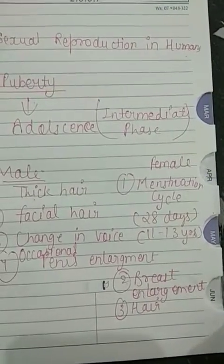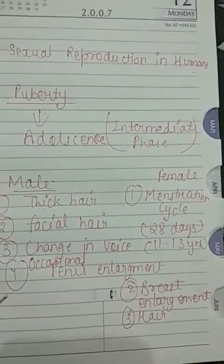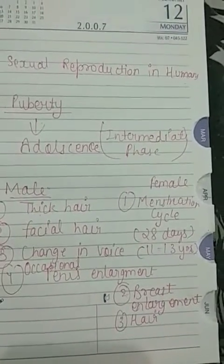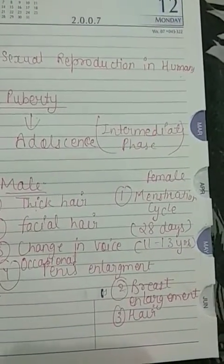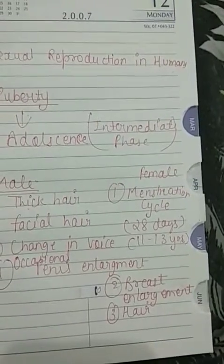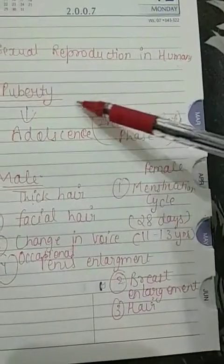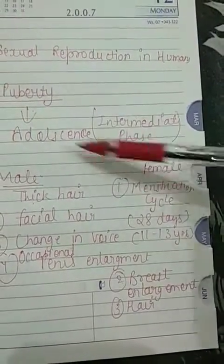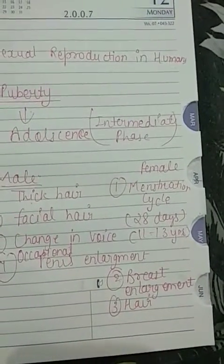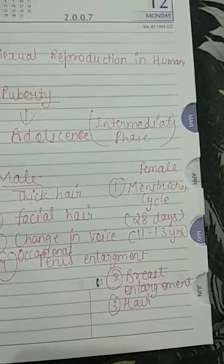The second change in female puberty is breast enlargement. As the girl grows up, you can see the enlargement of breasts. Also, hair growth under armpits and in the genital area is seen in females as well. In the next video we will discuss the male reproductive organ and how the male gamete is produced. I hope you all understand these concepts, and if you have any problem just ask in the WhatsApp group. Thank you.